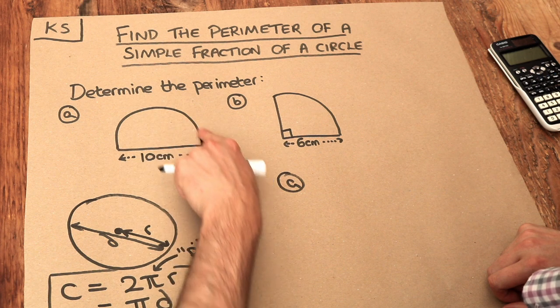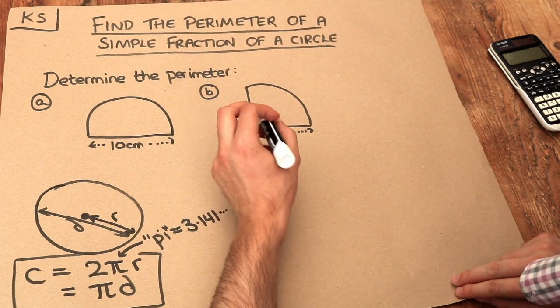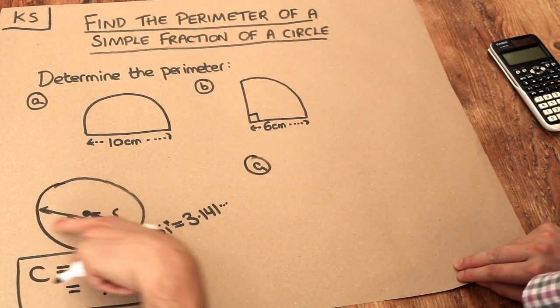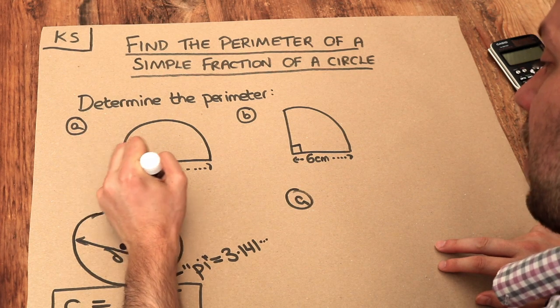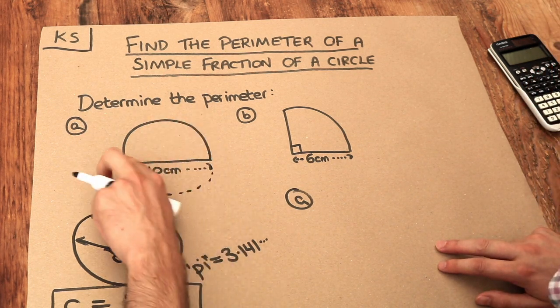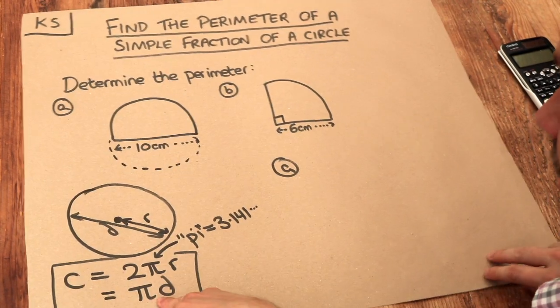Can you see that this is half a full circle? So what we do is we find the circumference of a full circle first using this length here. Now can you see, if I was to continue the circle on, that this length of 10 here is the full diameter of the circle. So I'm going to use this second formula here.